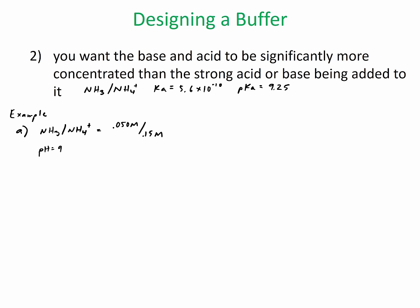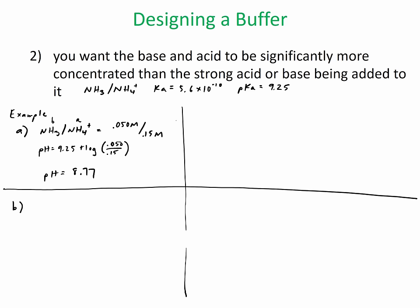If I calculate the pH of this, it's 9.25 plus the log of the concentration of base (0.050) divided by the acid (0.15), and my pH is 8.77. Next I'm going to do the same problem with a higher concentration but the same ratio — 0.5 molar of the base and 1.50 molar of the acid. Since it's the same ratio as before but 10 times the concentration, the pH is actually the same.